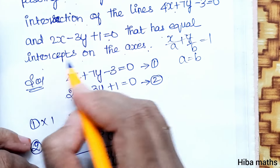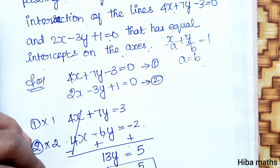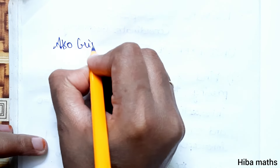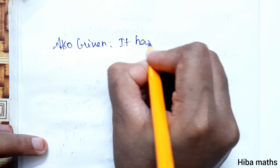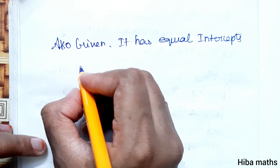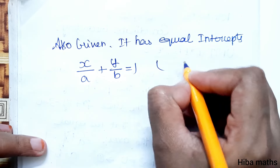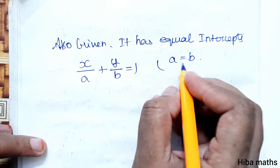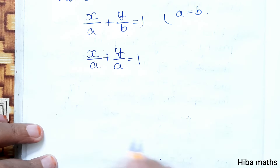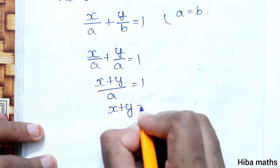Since the line has equal intercepts on the axis, we use the intercept form x/a + y/b = 1 with a equal to b. Substituting b = a gives x/a + y/a = 1, so (x + y)/a = 1, which means x + y = a.